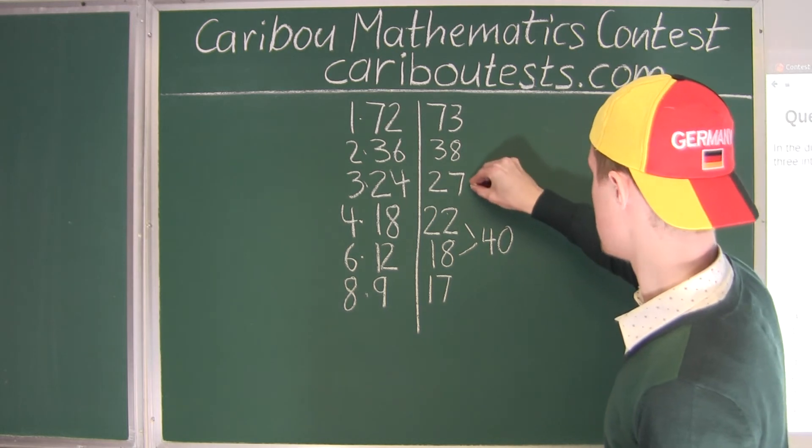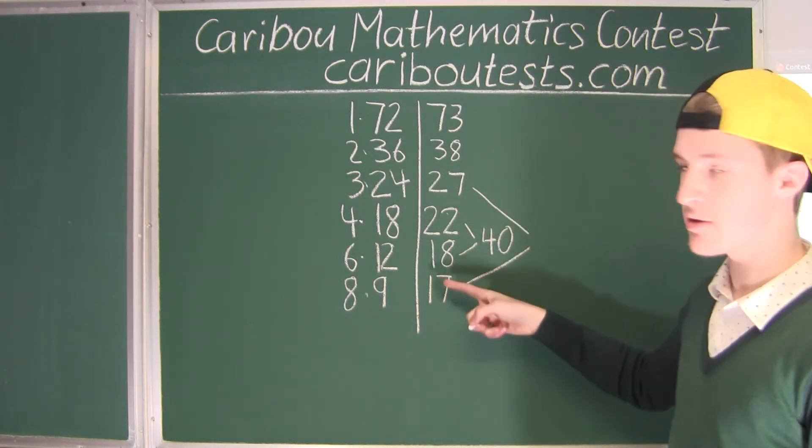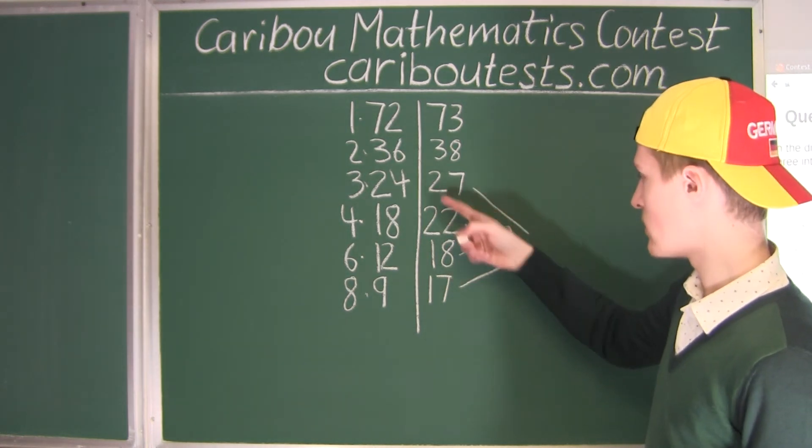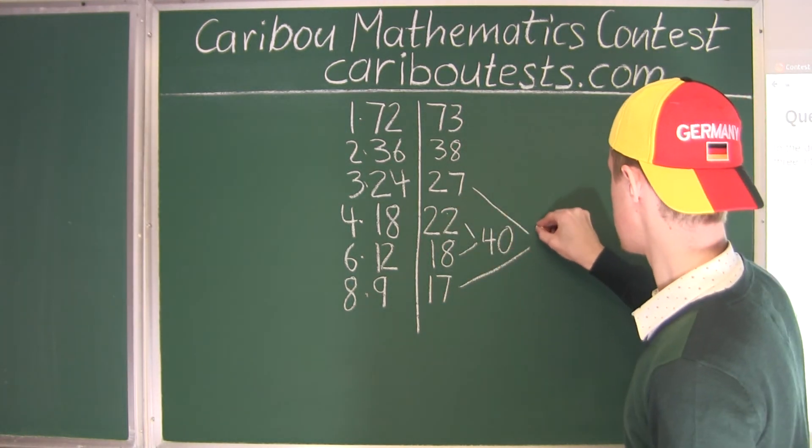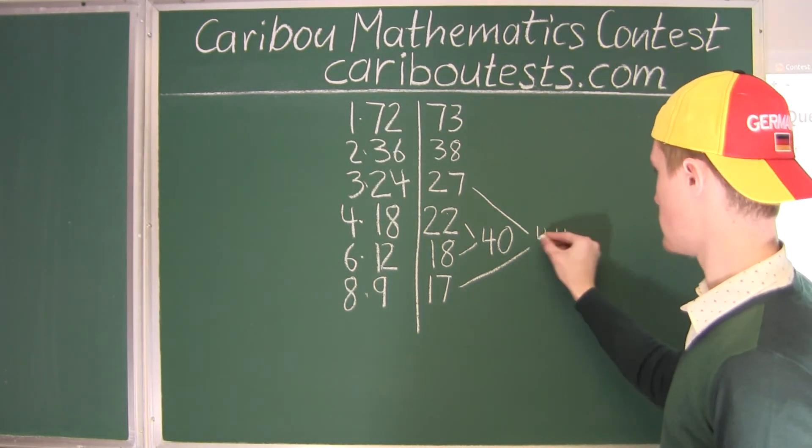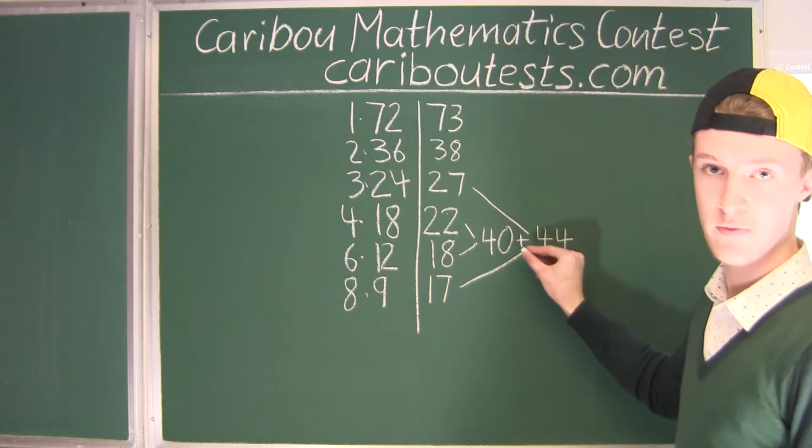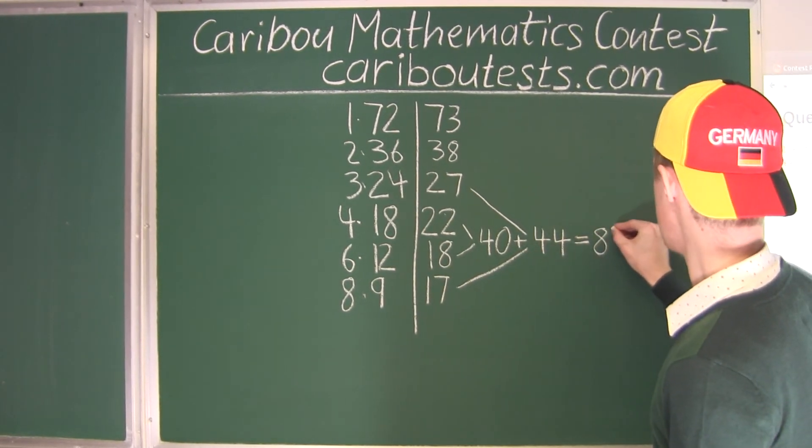And then for 27 and 17, well 7 plus 7 is 14, 20 plus 10 is 30, 30 plus 14 is 44. So now we need to add these two sums. 40 plus 44 is equal to 84.